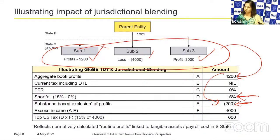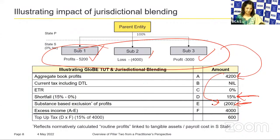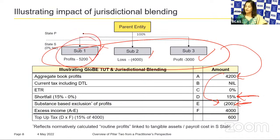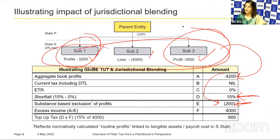Key messages: you are looking at jurisdictional blending, not individual entities. You are not looking at other jurisdictions outside UAE — even if the parent has presence in Brazil or Malaysia with huge taxes paid, you do not do global blending. You are also not looking at Sub 1 and Sub 3 individually; you look at Sub 1, Sub 2, and Sub 3 on an aggregate jurisdictional blending basis. And importantly, you are levying top-up tax only on excess income, not on the entire gross income.